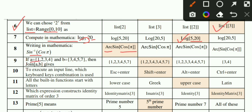MCQ number 9: If A equals the set {1, 2, 3, 4} and B equals {3, 4, 5, 7}, then Join[A, B] gives the result. We apply Union - joining both sets together gives {1, 2, 3, 4, 5, 7}. This is the correct option.